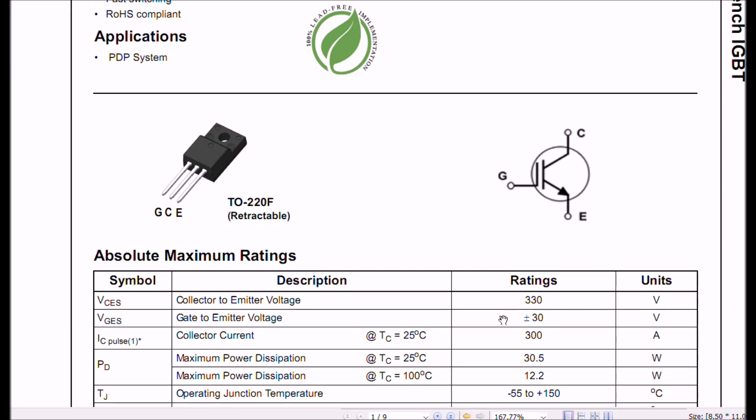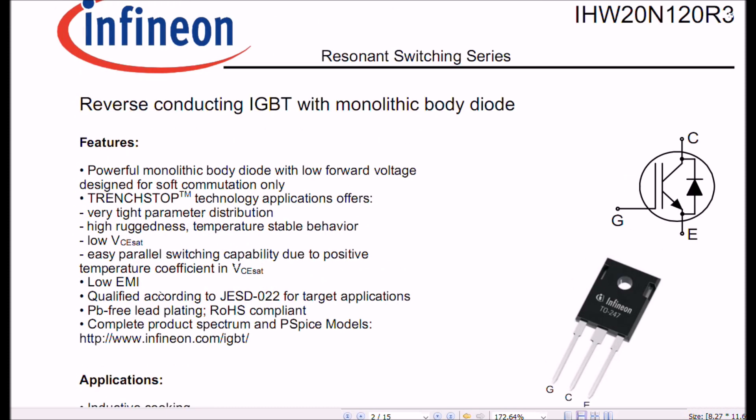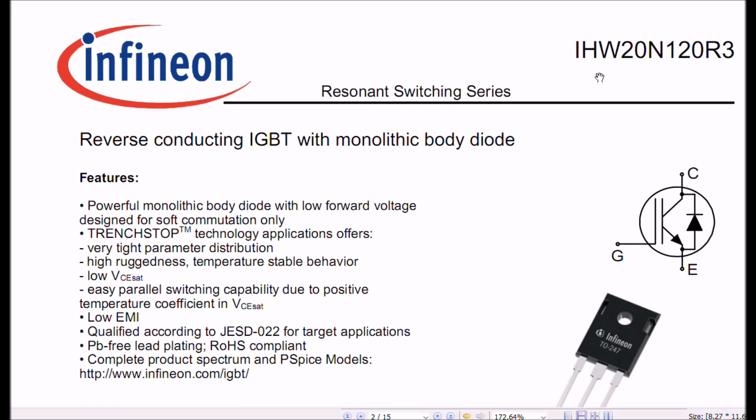These type could lend themselves very easily to being used in an H-bridge motor control. The collector current, according to the spec sheet, can be up to 300 amps. Wow. Imagine getting four of these and you could replace a MOSFET with one of these. Imagine being able to switch 300 amps. Nice. Let's take another look at another item. This one is another type, the Infineon IHW20N120.